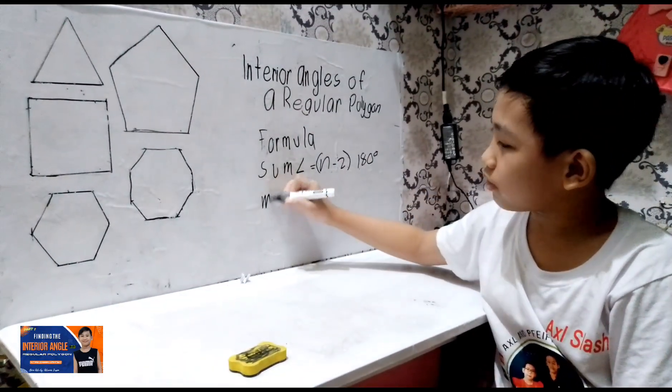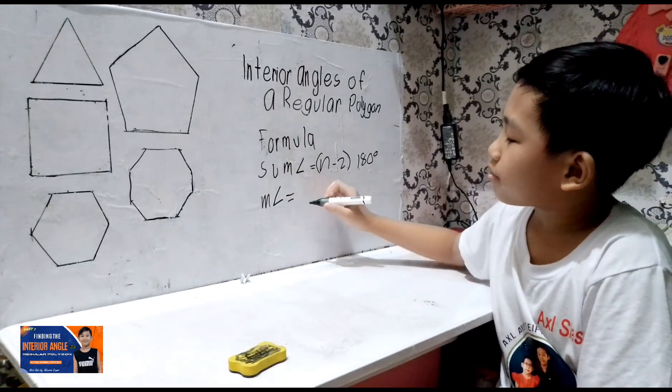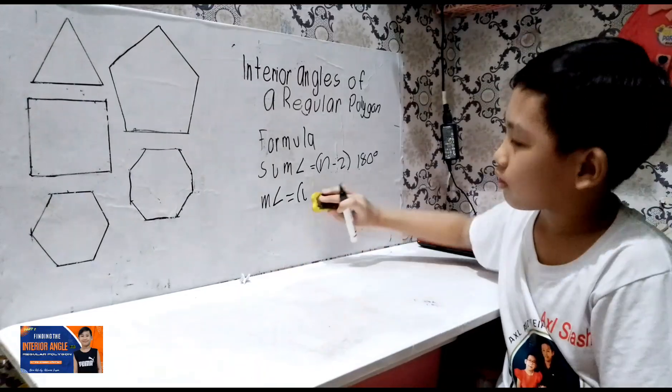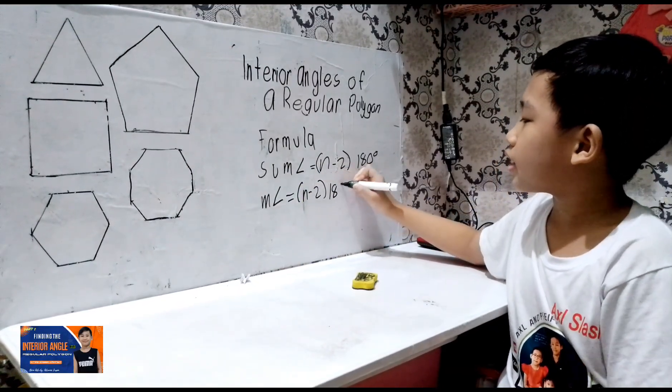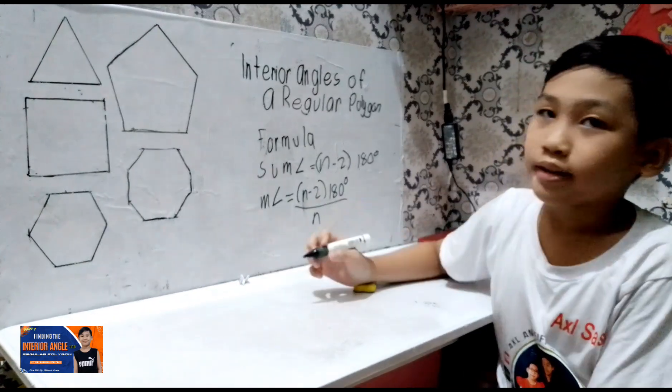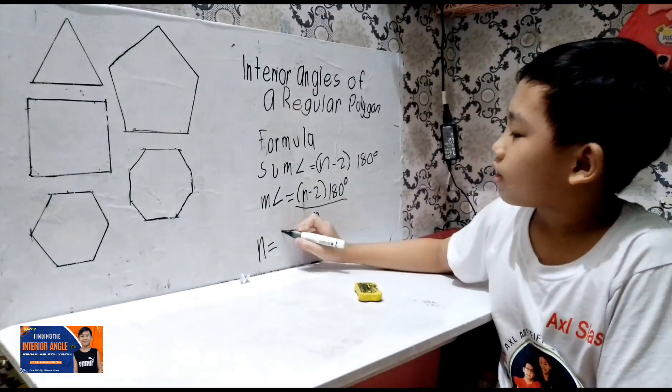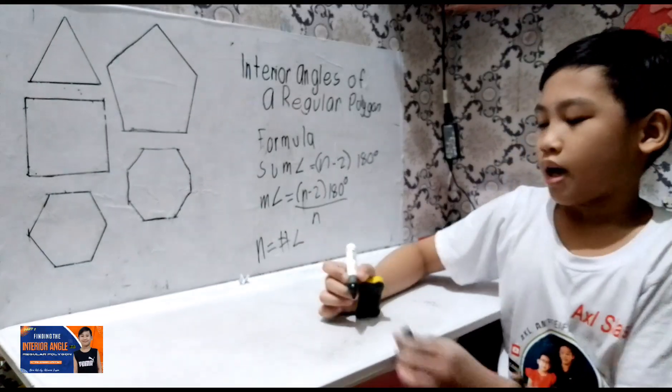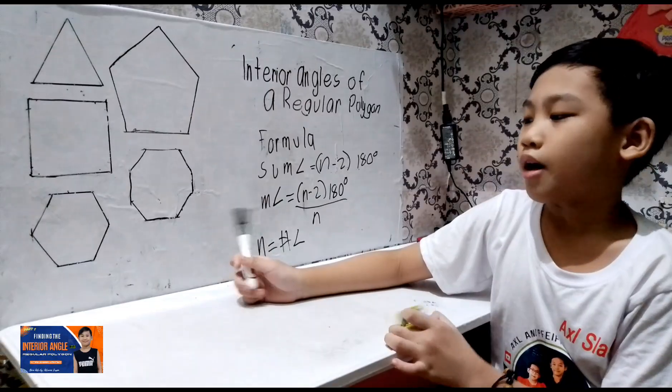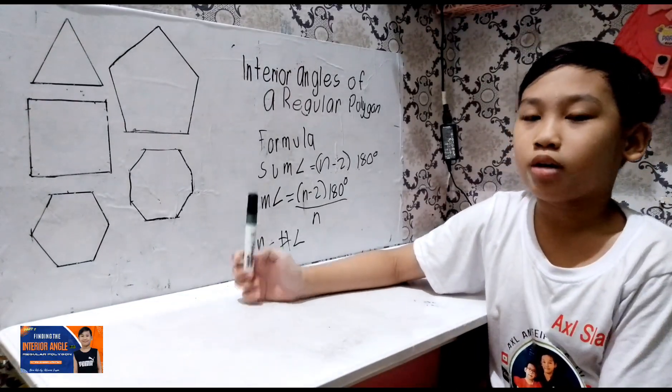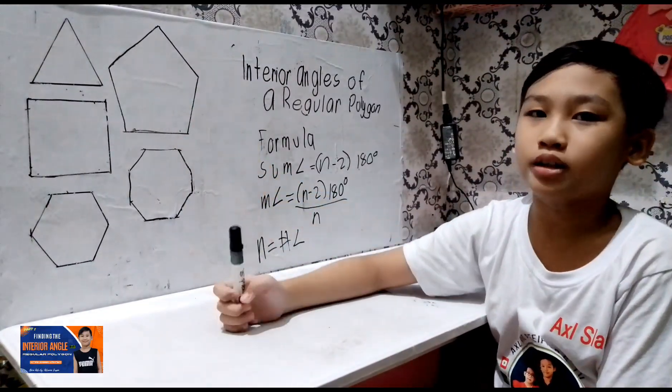Now, when we're asked to find the measurement of each interior angle, we must use this as well. N minus 2 multiplied by 180 degrees divided by N. Now, N is number of angles. I have prepared some examples of a regular polygon. Now, when we say regular, a polygon is regular when all sides are equal and all its interior angles are equal.